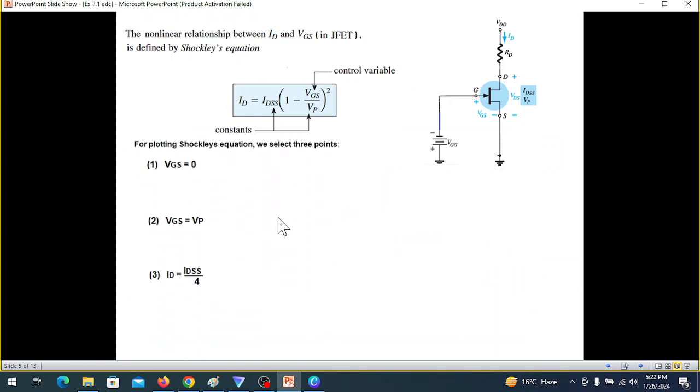Now we have to plot the transconductance curve. For that we need three points in this equation. We put VGS equal to zero and find the value of ID. We also put VGS equal to VP and find the value. And the third point is ID equal to one-fourth of IDSS.